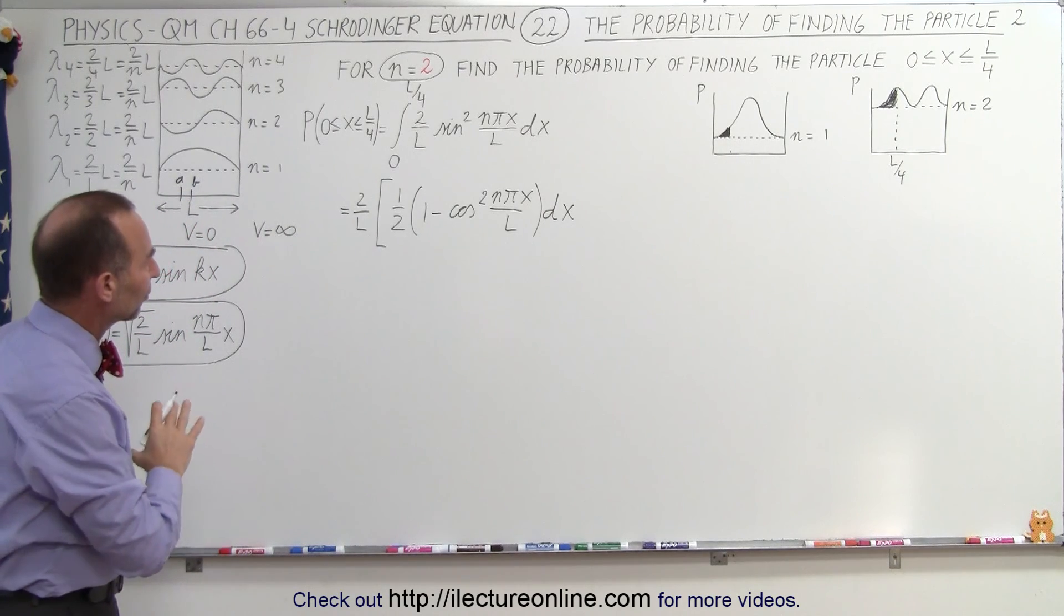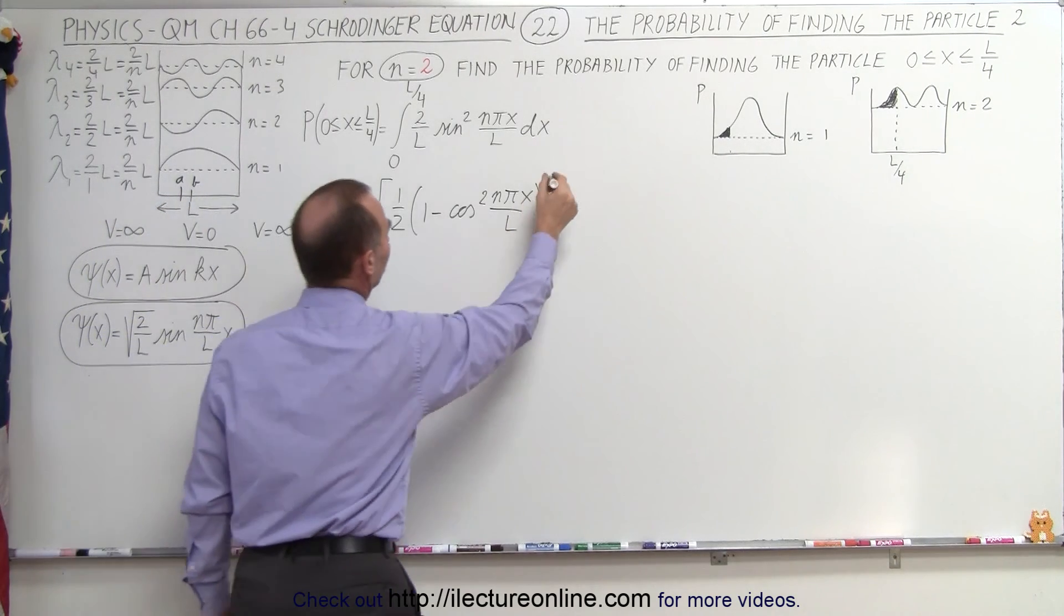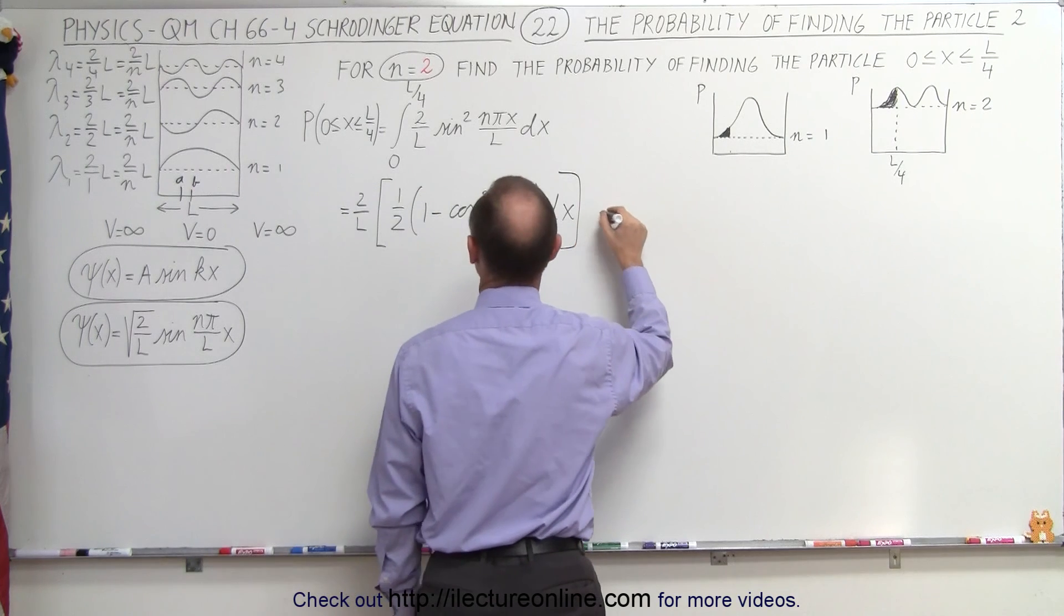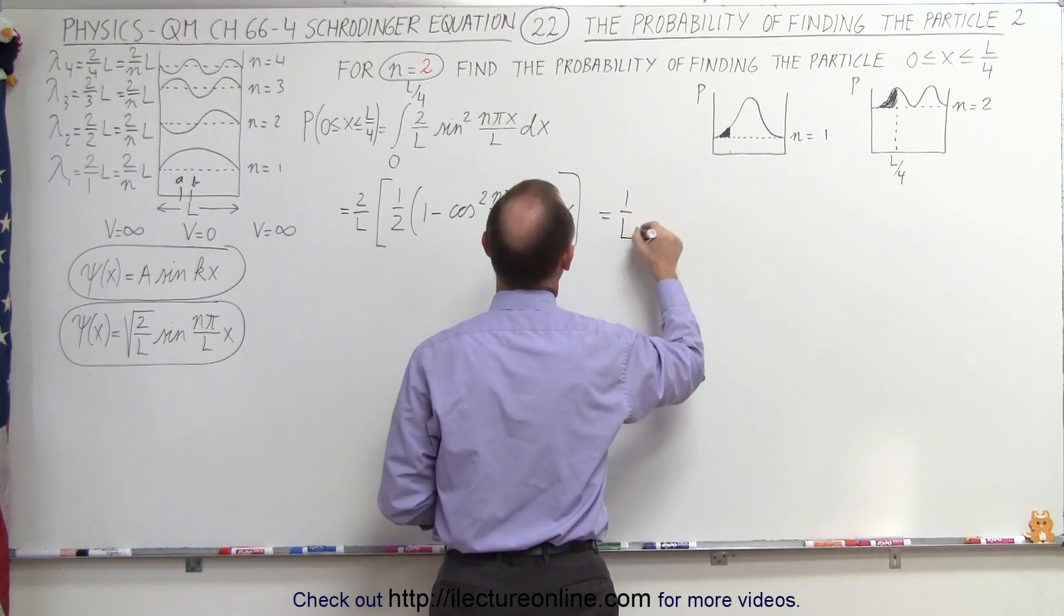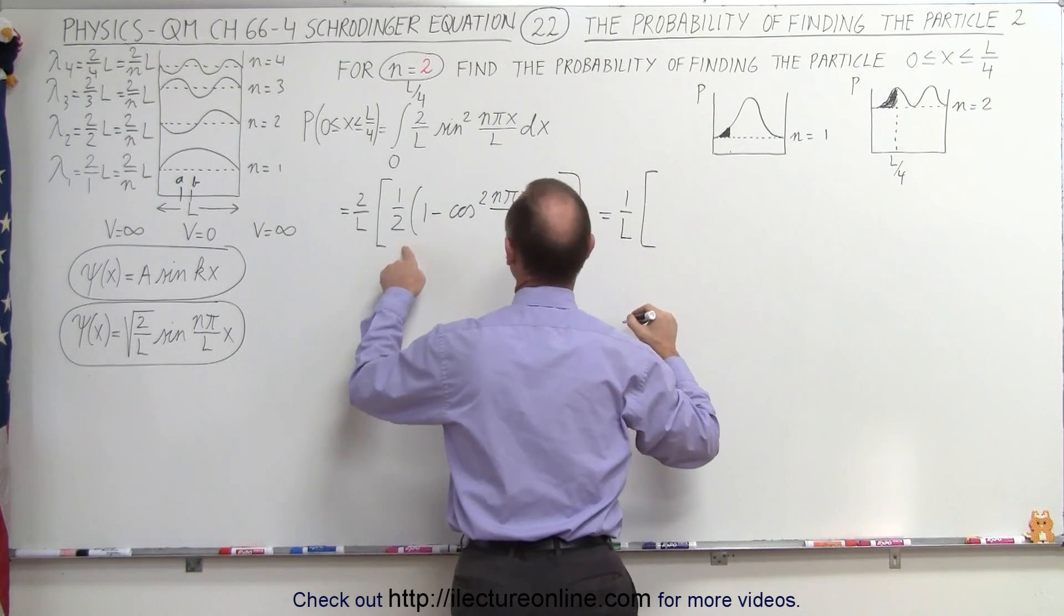Now we're going to separate those two into two separate integrals, so this is equal to, we can put the one half outside, this is 1 over L times the integral of dx.